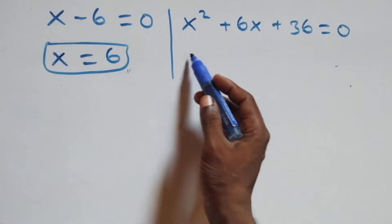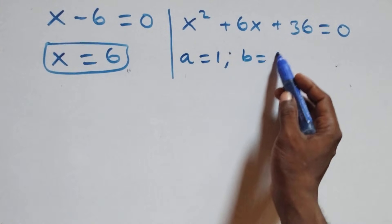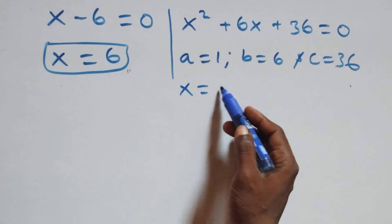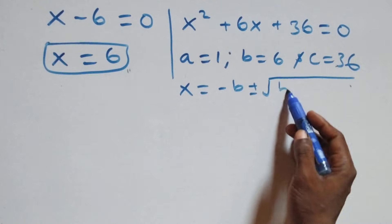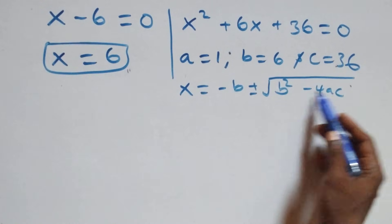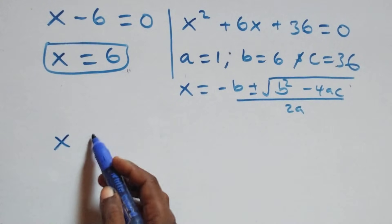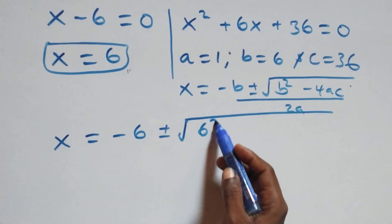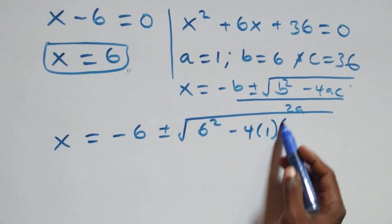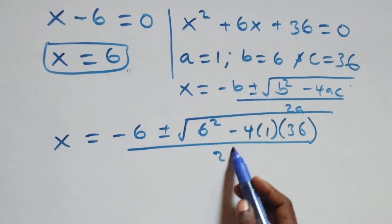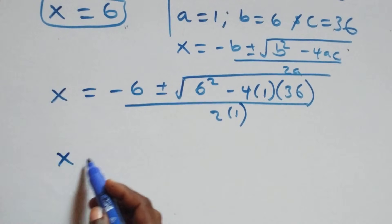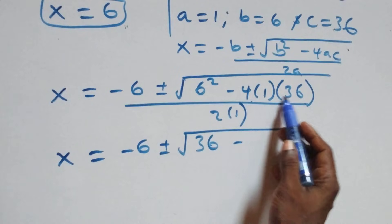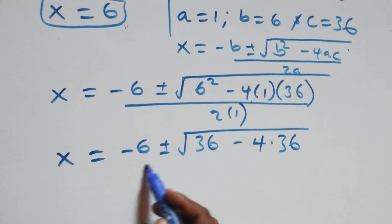For the quadratic equation, a equals 1, b equals 6, and c equals 36. Applying the quadratic formula: x equals minus b plus or minus square root of b squared minus 4ac, all over 2a. This gives x equals minus 6 plus or minus square root of 6 squared minus 4 times 1 times 36, all over 2 times 1.